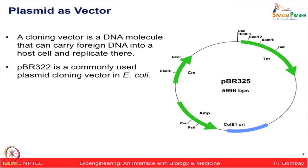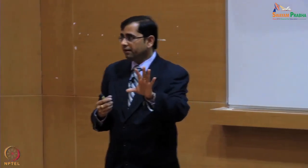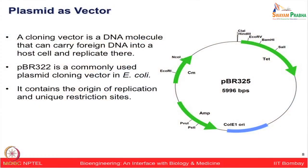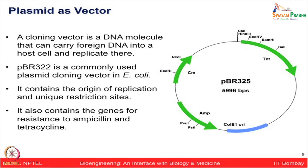Bacteria are present everywhere, so when you grow bacteria you automatically get contamination from other species. To select only the bacteria carrying your gene of interest, you use antibiotic resistance genes in the vector as selection markers. Only bacteria containing your plasmid — and therefore your gene of interest — will survive. This vector map includes antibiotic resistance genes such as ampicillin, chloramphenicol, and tetracycline.